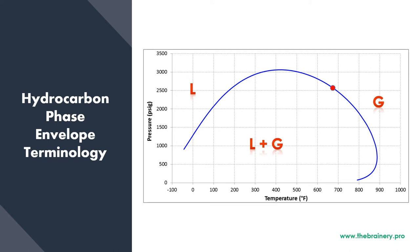If you look at this blue colored line showing the phase envelope for a produced fluid, it's a combination of two different lines. One is the bubble point curve, moving from the left all the way to the top and slightly bent or tilted downwards towards the point known as the critical point. The second curve is called the dew point curve, which originates from the critical point and goes down.